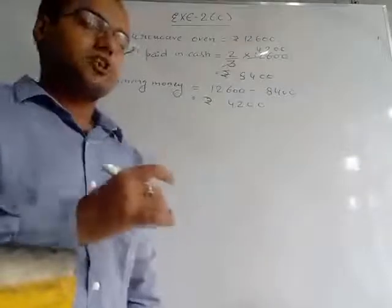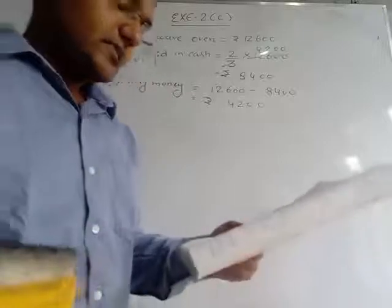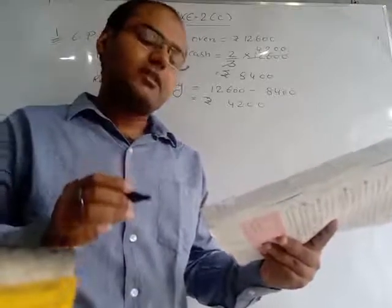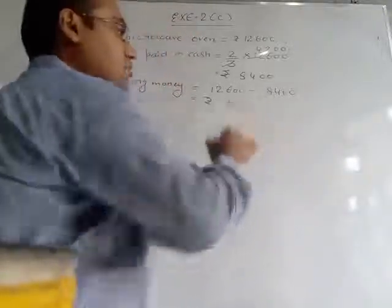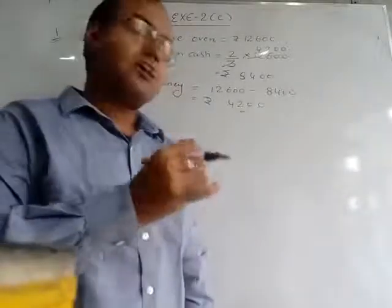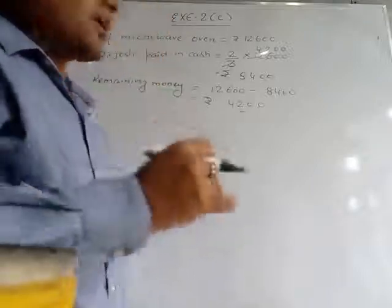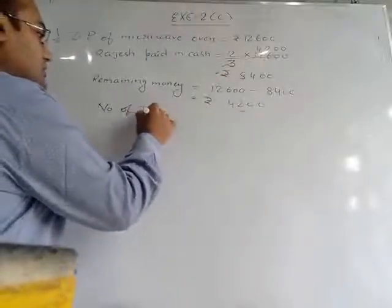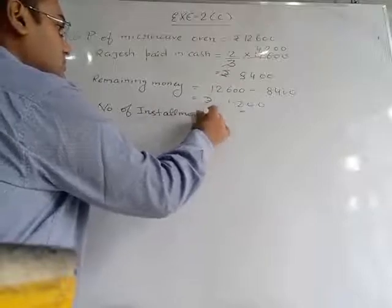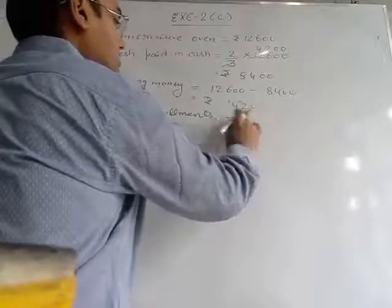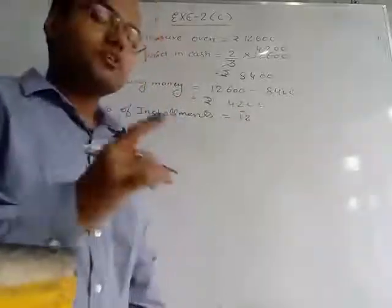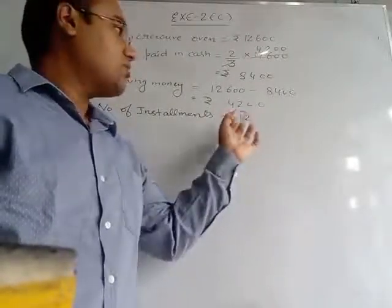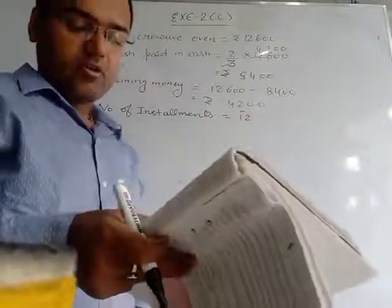So 4,200 rupees is still remaining which Rajesh has to pay. The rest of the money he paid in 12 equal monthly instalments. So this remaining amount he did not give in a single payment — he gave it 12 times. Number of instalments are given. So what we have to find? Find the amount of each monthly instalment.